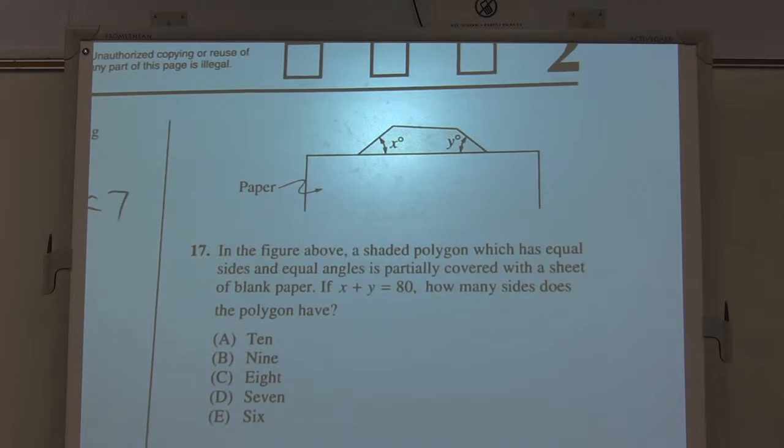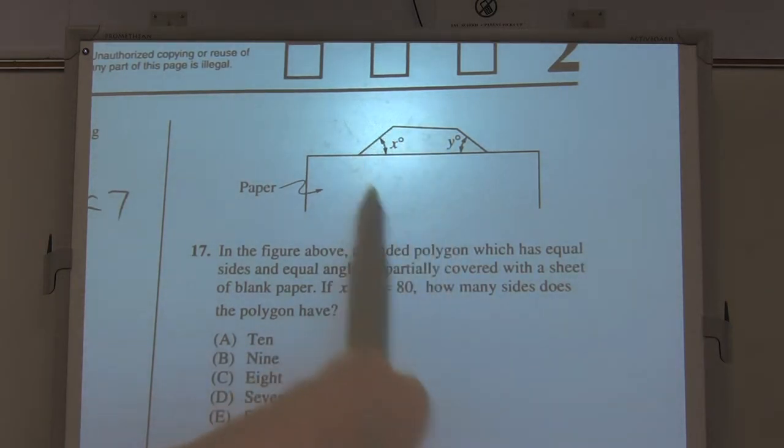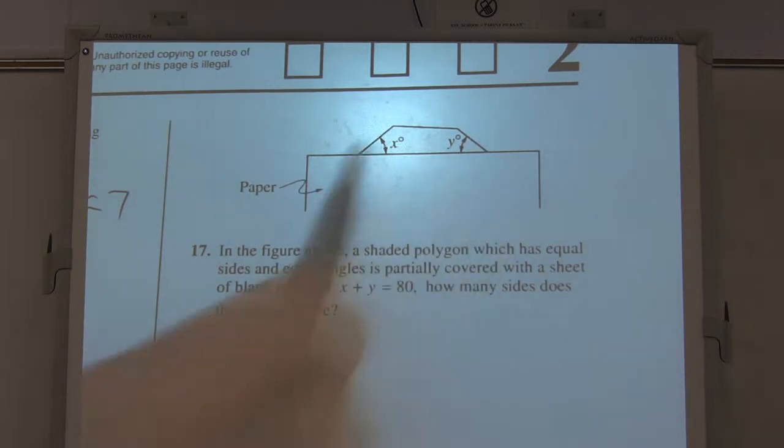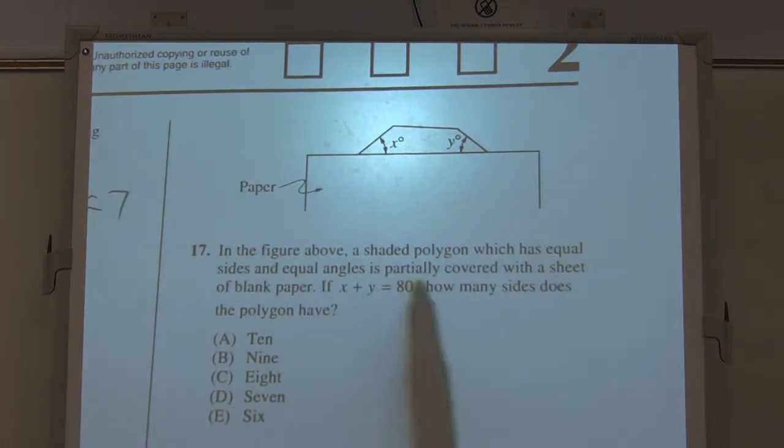In the figure above, a shaded polygon which has equal sides and equal angles. So whatever this polygon is, it's a regular polygon. All sides are equal, all angles are equal. And I don't know how many sides or angles are equal here. It's partially covered by this blank sheet of paper, so I have this paper covering that up right here.